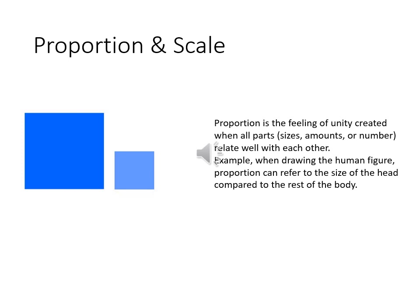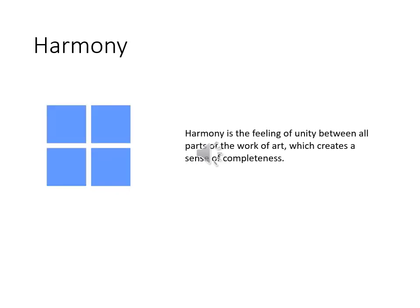Proportion and scale is another very important principle of design. It refers to the relative size and scale of various elements in the design. Proportion is basically the feeling of unity created when all parts relate to each other — for example, drawing a human figure where the head is proportionate to the rest of the body. Proportion and scale help you achieve balance in your compositions.